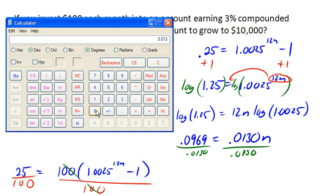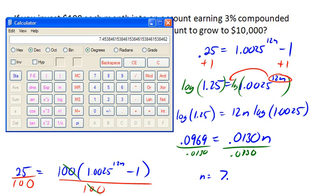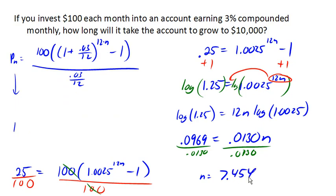So n is 7.454 years. So it's gonna take a little under 7 and a half years for this account to grow to $10,000.